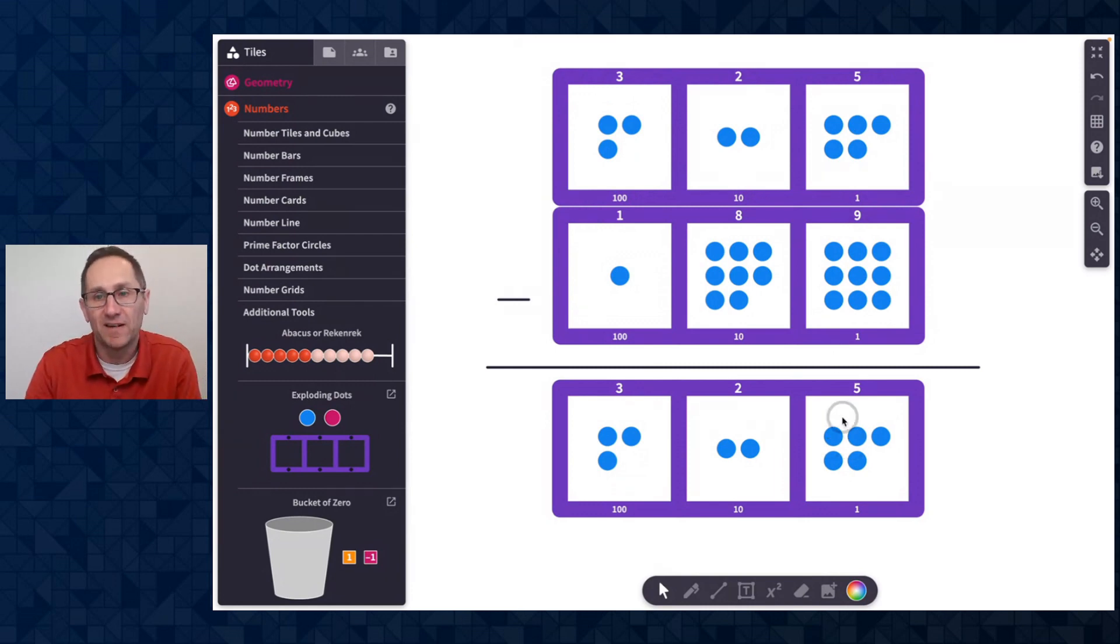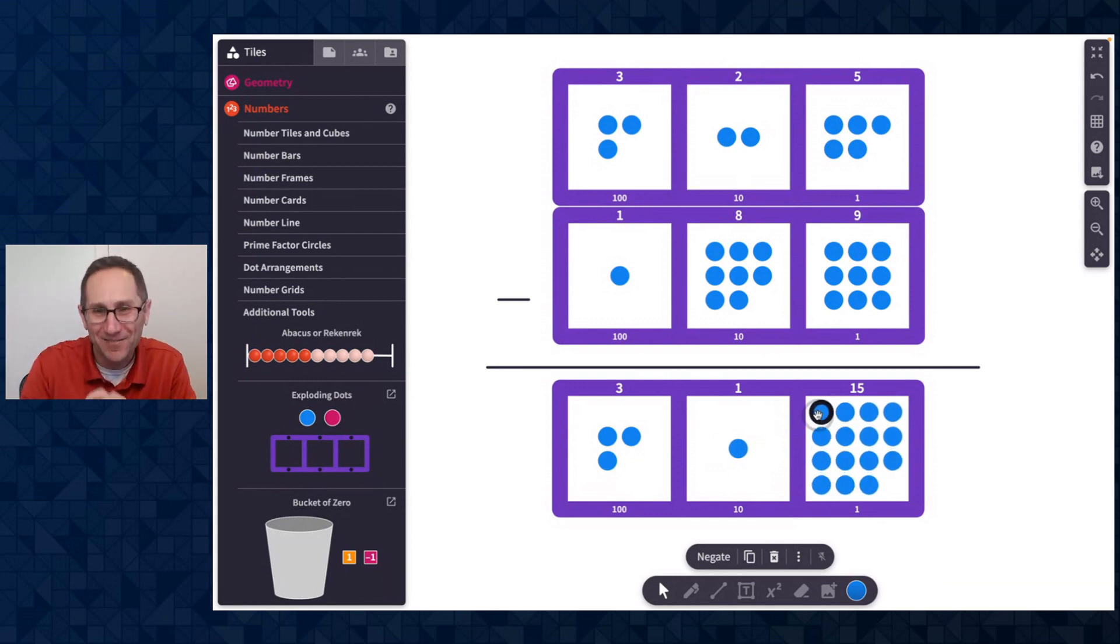All right. So I need to do five minus nine here. I need to subtract or remove nine dots out of the ones place. I can't do that. So I'm going to take this one and I'm going to drag it from the tens place to the ones place and watch what happens when I do that. Oh, it splits up into 10 of them.